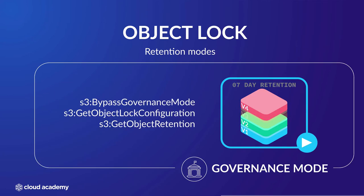By enabling governance mode, it prevents your users from performing a delete or an overwrite on any of the versions of your objects in the bucket throughout the duration set by the retention period. However, if you have very specific permissions including S3 bypass governance mode, S3 get object lock configuration, and S3 get object retention, then a user will still be able to delete an object version within the retention period or change any retention settings on that bucket.